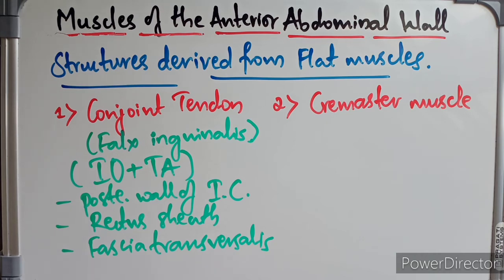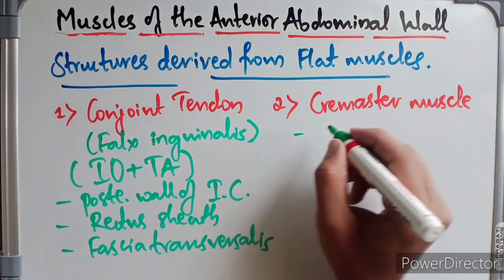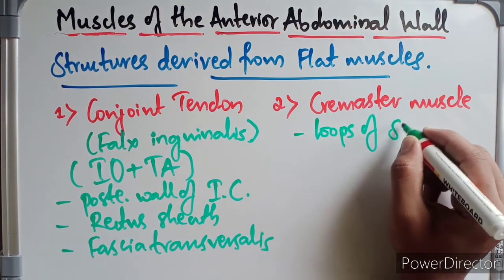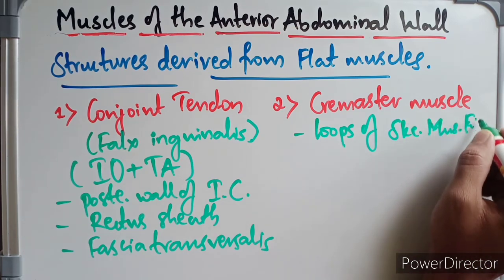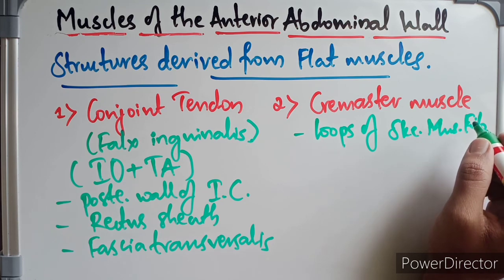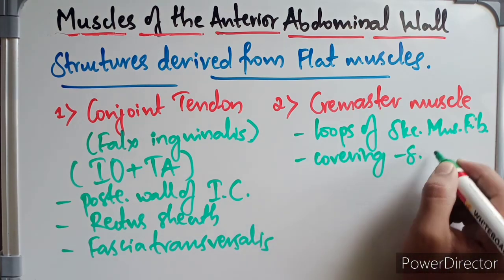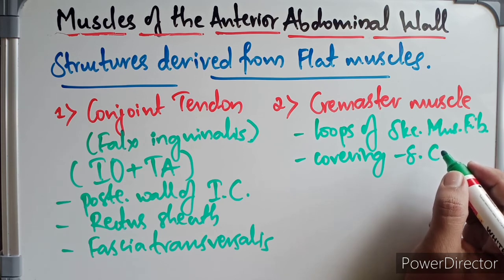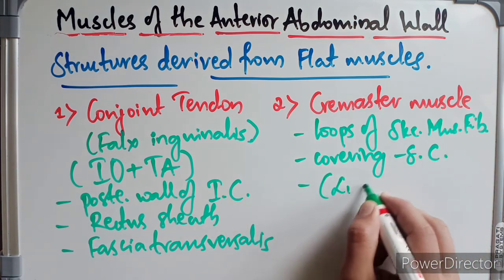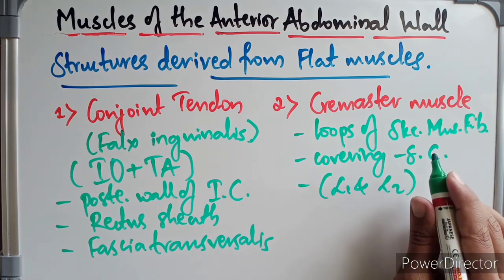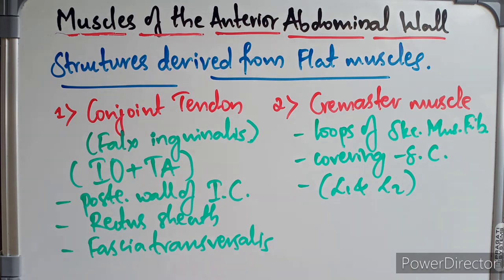The cremaster muscle consists of a series of loops of skeletal muscle fibers. These loops of cremaster muscle and fascia form a covering around the spermatic cord. The medial ends of the loops are attached to the pubic tubercle and the pubic crest. It is supplied by sympathetic fibers from L1 and L2 segments. Thank you for watching — if you like the video, make sure to subscribe and watch our other anatomy videos.